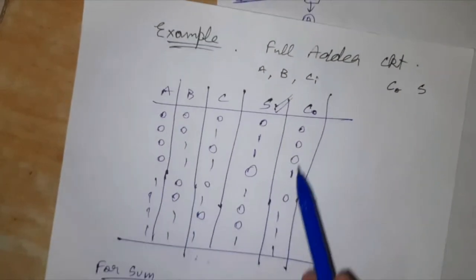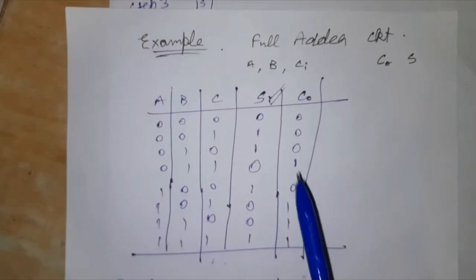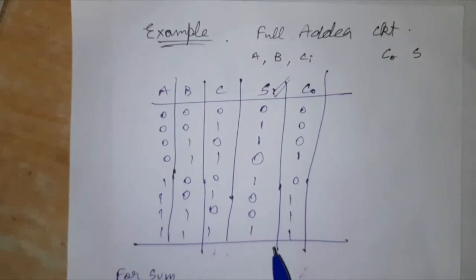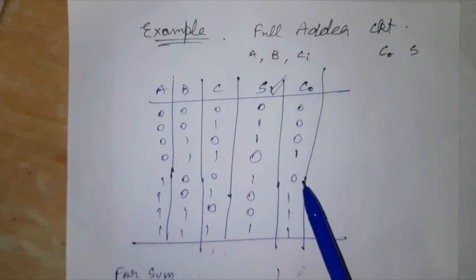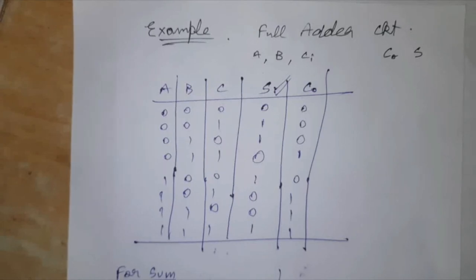Okay, now the 2nd part, that is C out. So what will be the C out for this full adder circuit? So I suggest you to try this out as an exercise and I am going to draw the ROBDD diagram to which you can refer just to check your result.